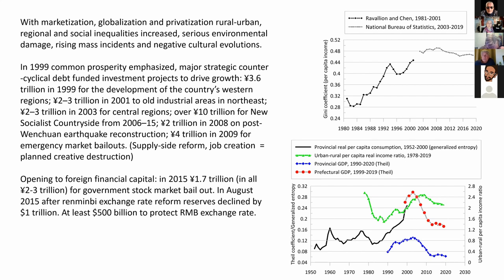So in 1999, the Chinese government started to re-emphasize the notion of common prosperity, and undertook a series of major counter-cyclical debt-funded investment projects: 3.6 trillion for the development of the western regions, 2 to 3 trillion for old industrial areas in the northeast, 2 to 3 trillion for central regions, over 10 trillion for the new socialist countryside from 2006 to 2015, 2 trillion on post-Wenchuan earthquake reconstruction, and 4 trillion for emergency market bailouts after the financial crisis. At the same time, more recently, supply-side reform and long-side job creation involve a process of planned creative destruction.